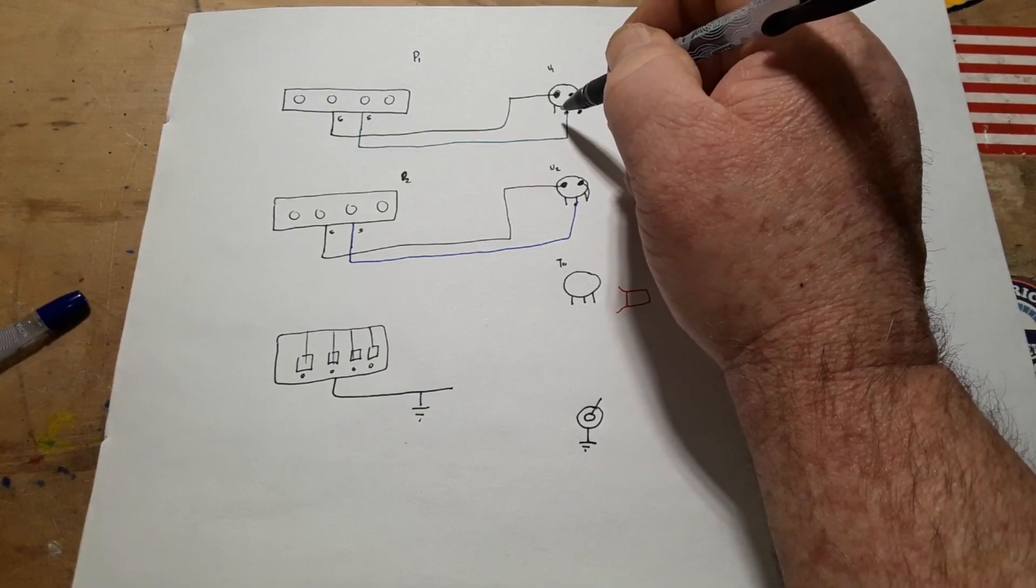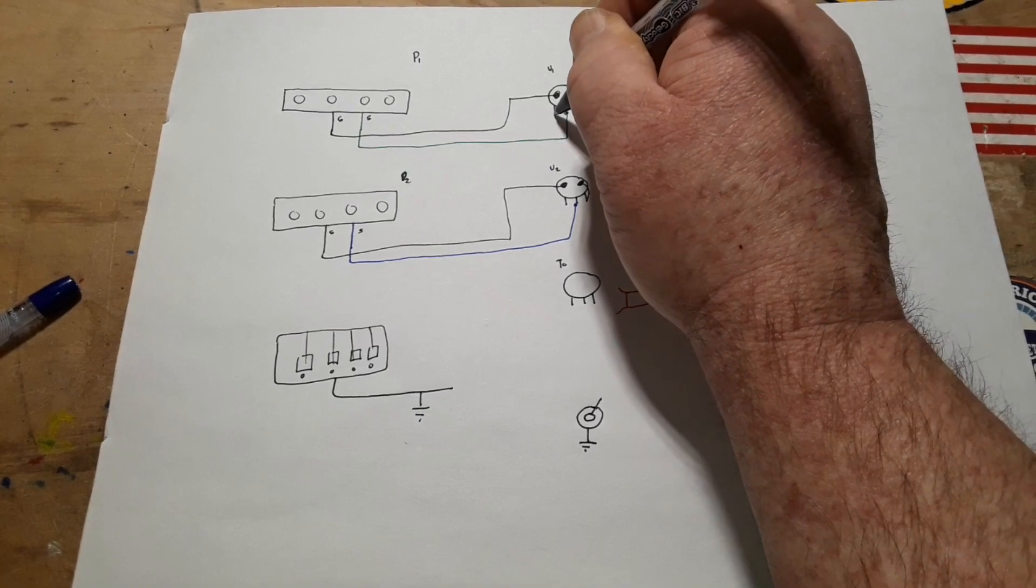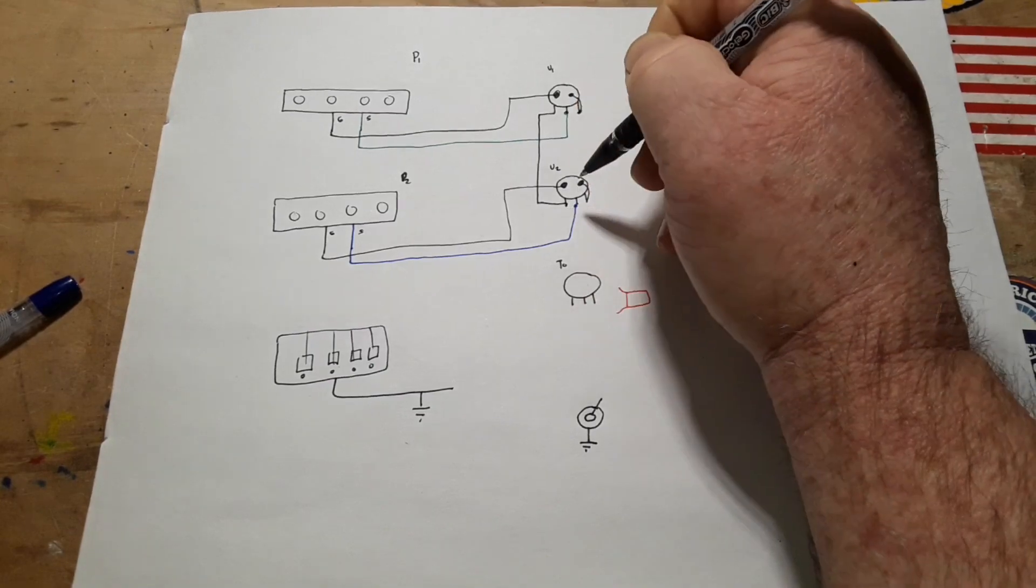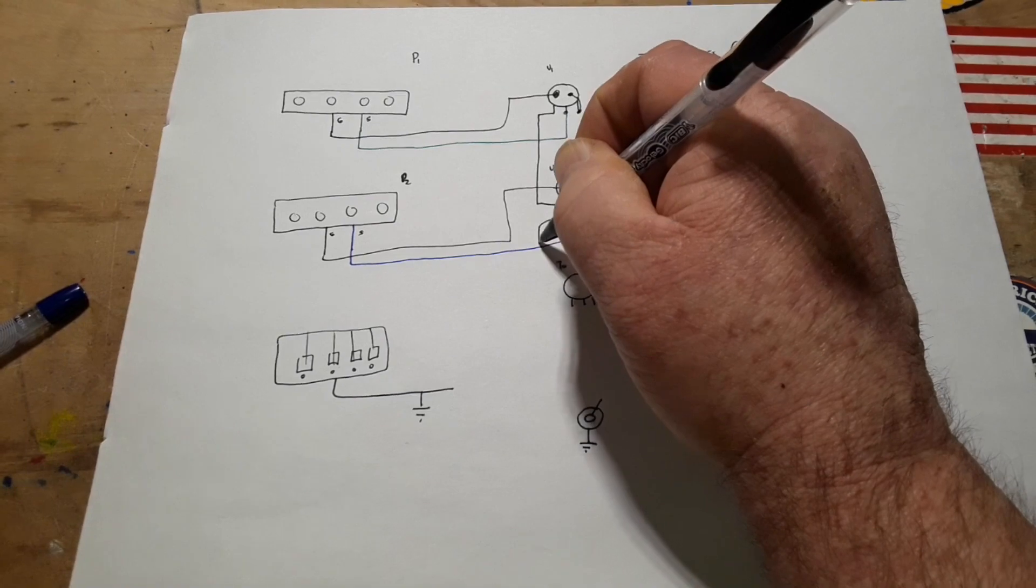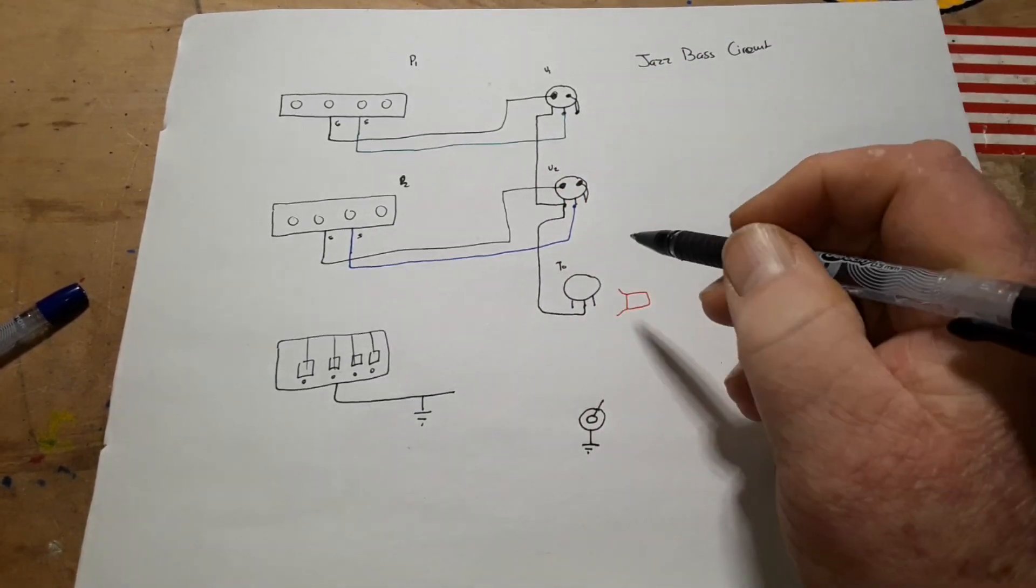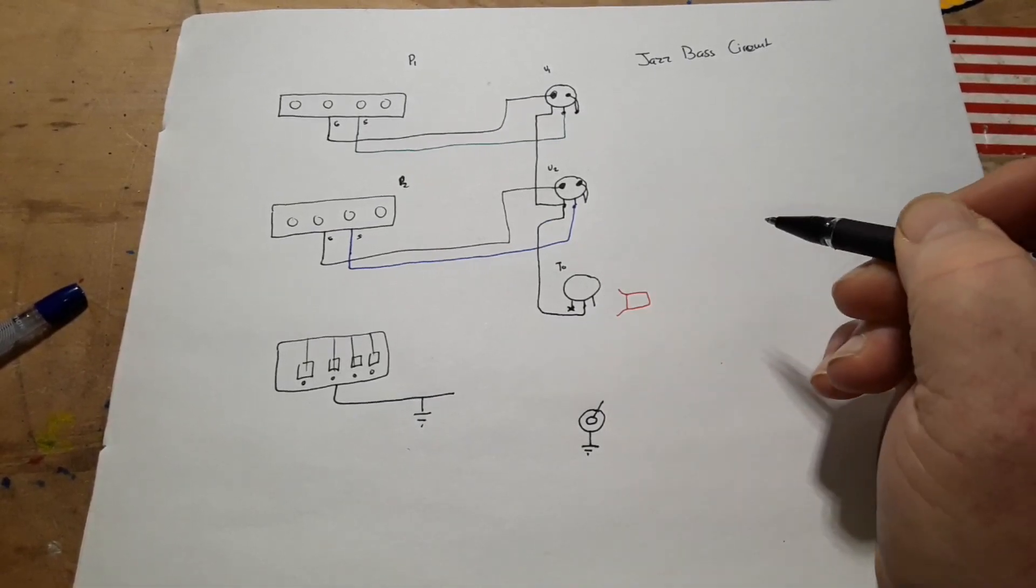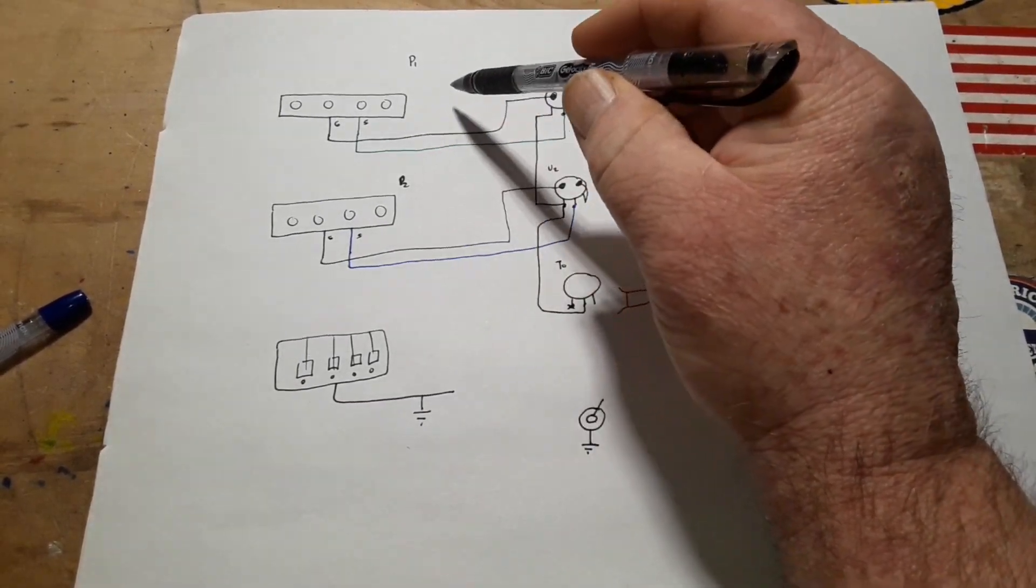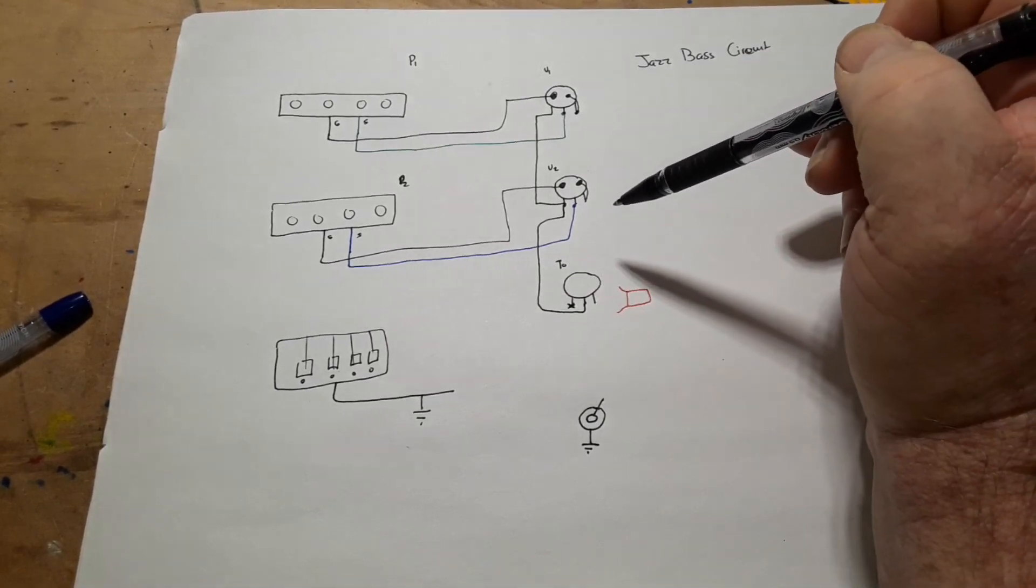We're going to come off of this pin down to here, to this pin, and then off this pin we're going to come down here to the center pin of our tone control. This one here is not going to be connected. So you see we have the signal coming from the pickup, either one, and then it travels down to the tone control.